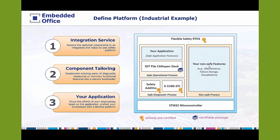The system architecture targets a safety capability of SIL2. The running hardware is a single STM32 microcontroller with a hardware memory protection unit MPU. The Flexible Safety RTOS forms the envelope separating safe from non-safe components — we call these envelopes processes. With each process, the containing software components get a personal view of the memory, separating running parts in the space domain. The non-safe process may contain existing software components for maintenance, failure storage, and visualization. In the safe diagnostic process, we combine the selected pre-certified safety measures: the X-Cube STL hardware self-test library and the safety add-ons. The CAN Open stack from ESIT builds the basis for the application in the safe operational process.